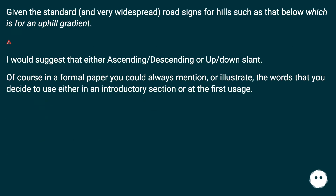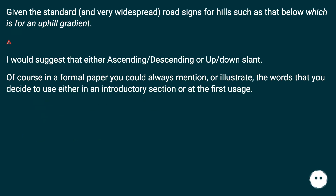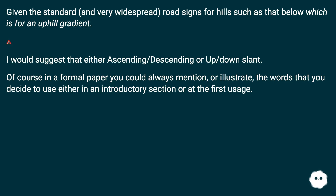Given the standard and very widespread road signs for hills — such as that for an uphill gradient — I would suggest either ascending/descending or up/down slant. Of course, in a formal paper you could always mention or illustrate the words you decide to use, either in an introductory section or at the first usage.